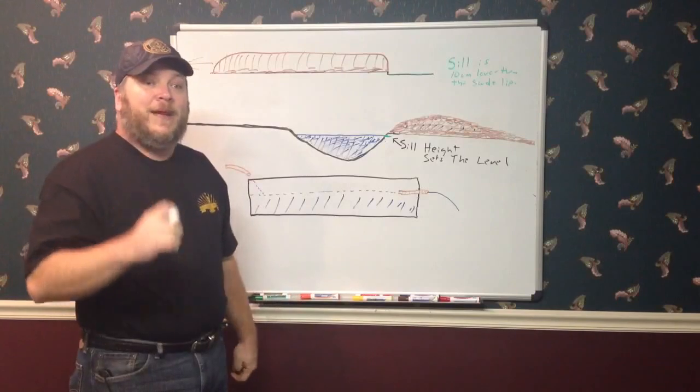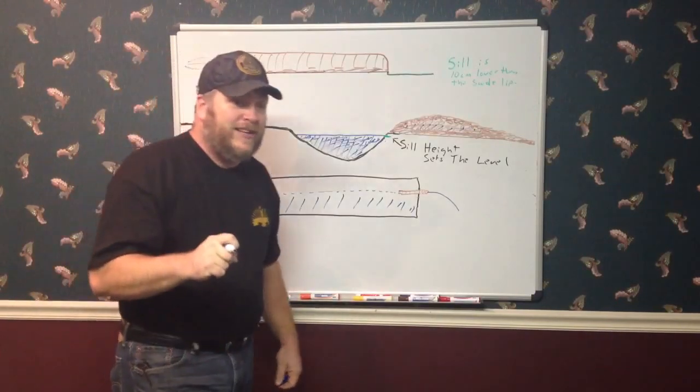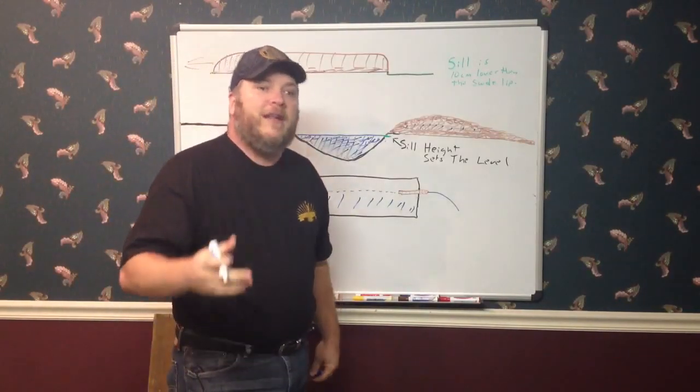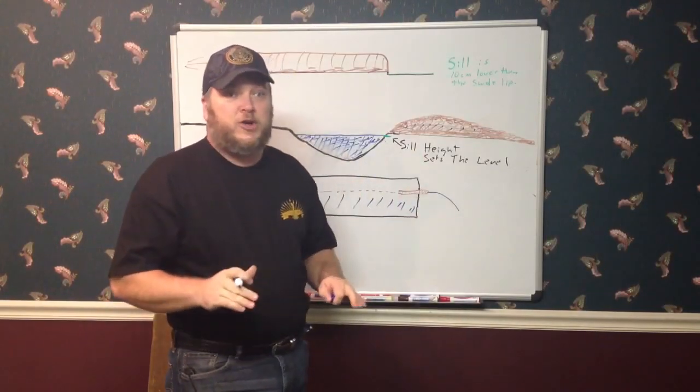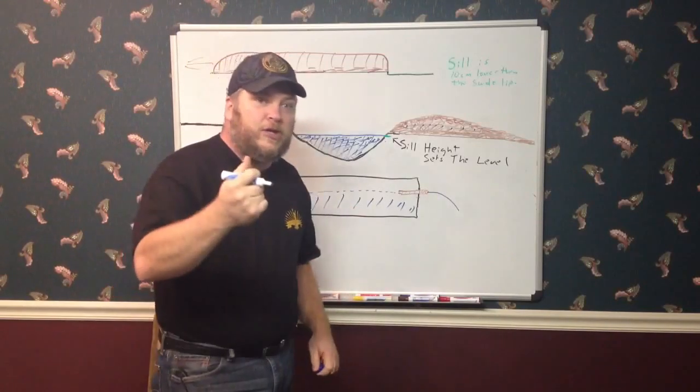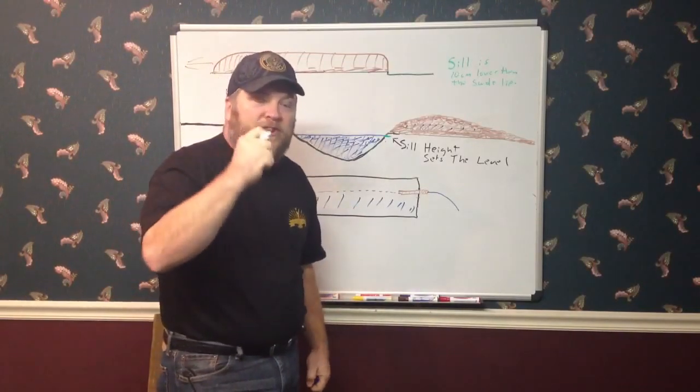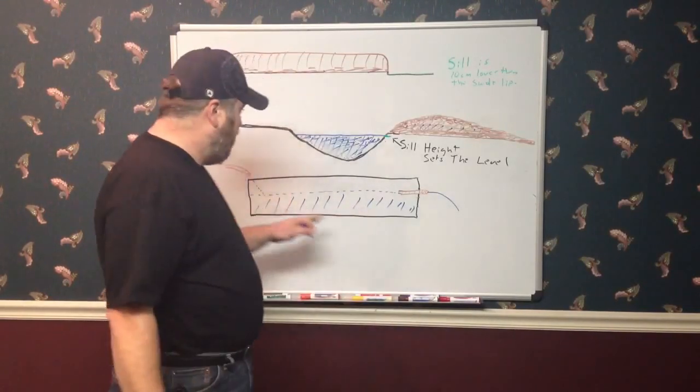And that's the big thing. Everything you're going to see today is based on level. And level is absolute. There's no such thing as pretty level or close to level or almost level. It's level or it's not. And for swales to function the way they're supposed to, the way I'm going to describe, they must be 100% level.